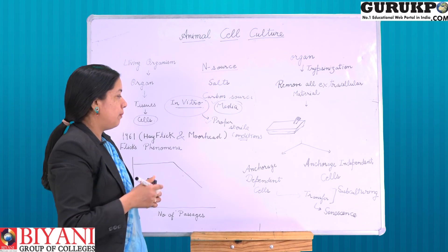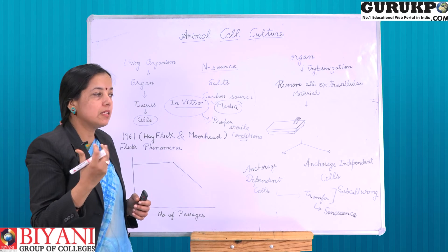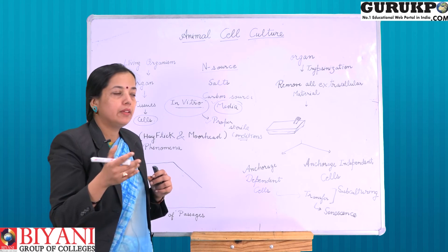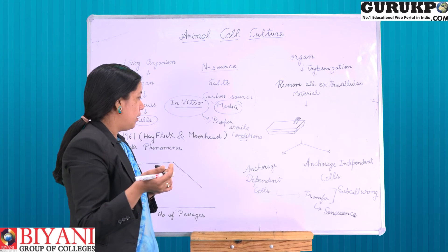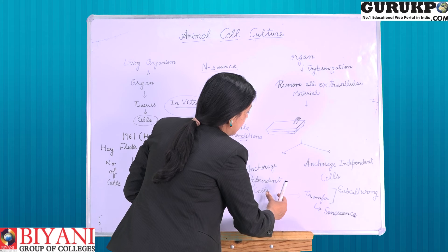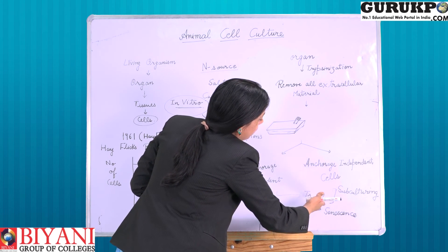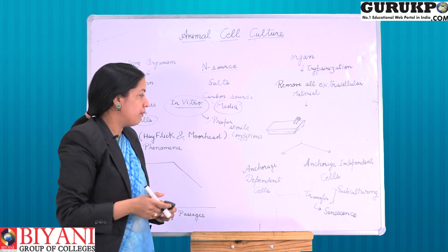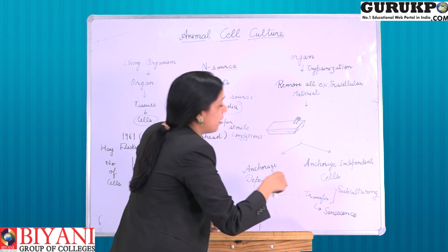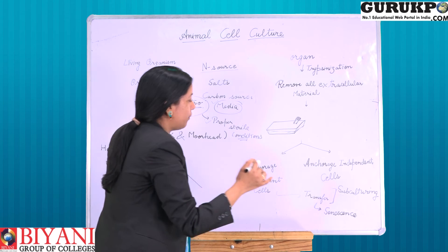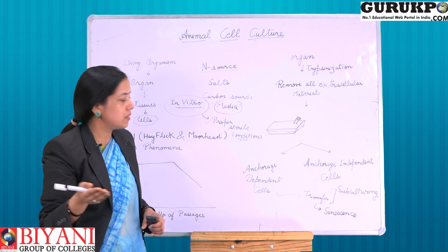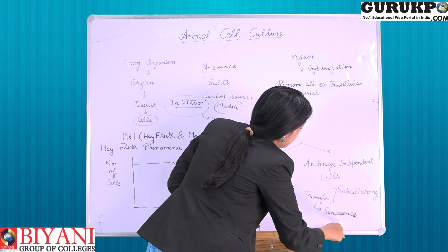When subculturing, we transfer cells because when cells grow on a media, they become confluent — they become attached to each other — and because of contact with each other, a process called contact inhibition prevents their further growth. After a particular stage, we remove the cells from that plate and transfer them to fresh media for further growth; this is known as subculturing. We keep on transferring cells to fresh media over a number of times. After a number of times, normal cells stop growing continuously because they show senescence — they stop growing after a particular number of divisions.